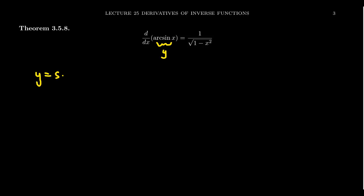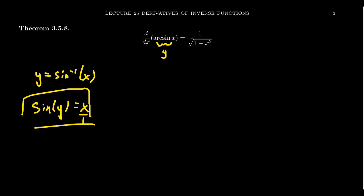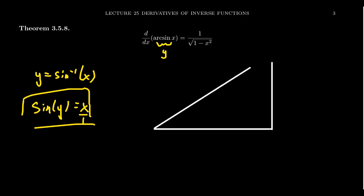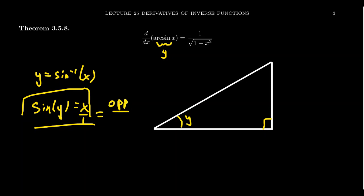That is to say, y equals sine inverse of x. Well, if y equals sine inverse of x, that actually implies that sine of y is equal to x, or better yet, it's equal to x over 1. Why is this perspective useful? As we've often played around with trigonometry, we can set up a right triangle associated to this angle y — because y is going inside a sine, it's an angle here. So what we see is that we get a y over here. Let's construct a right triangle for y.